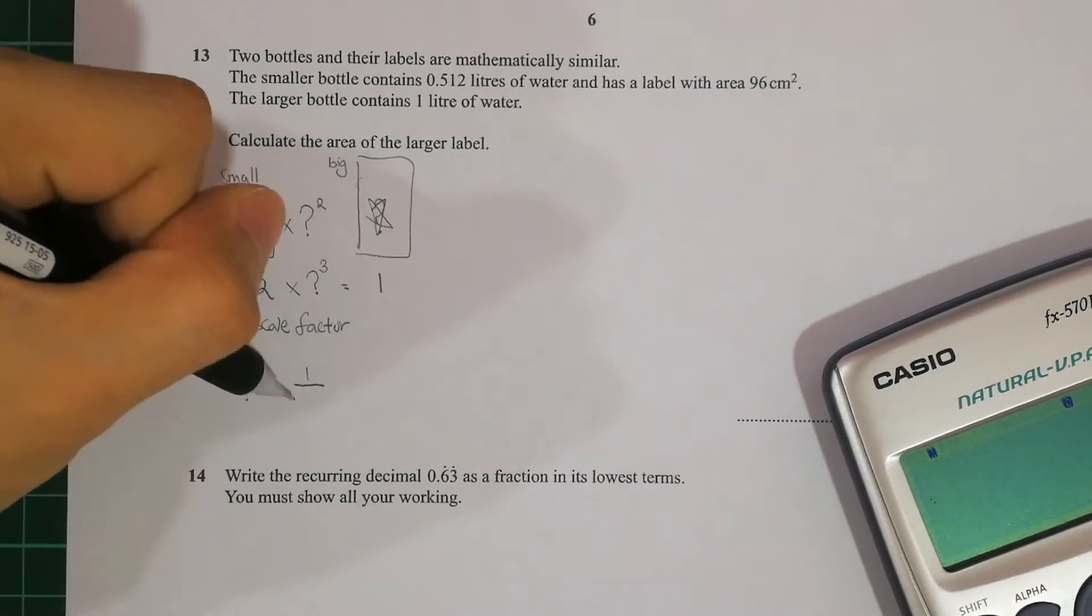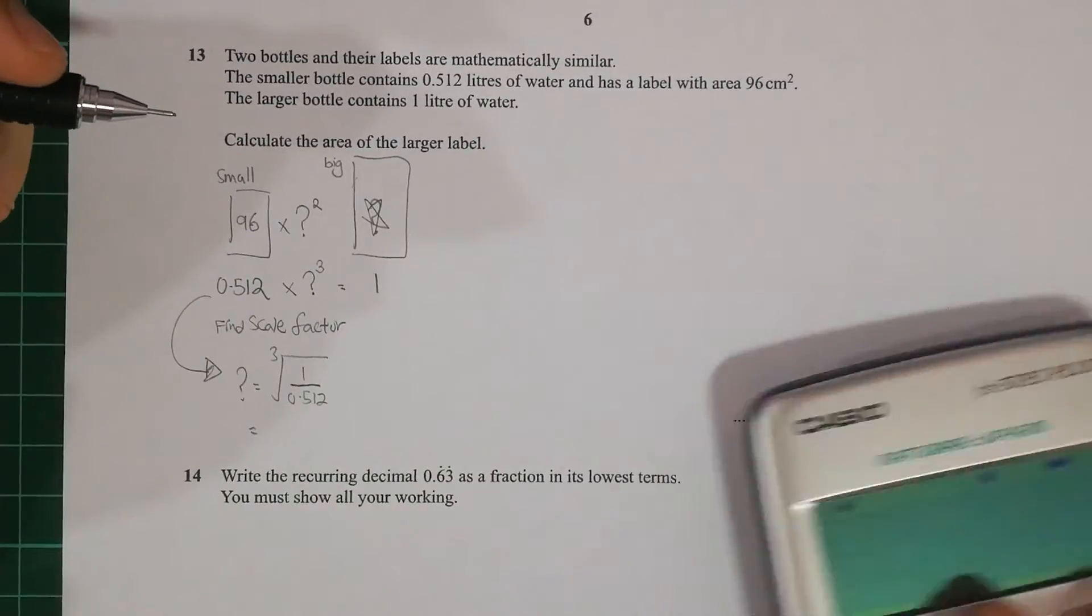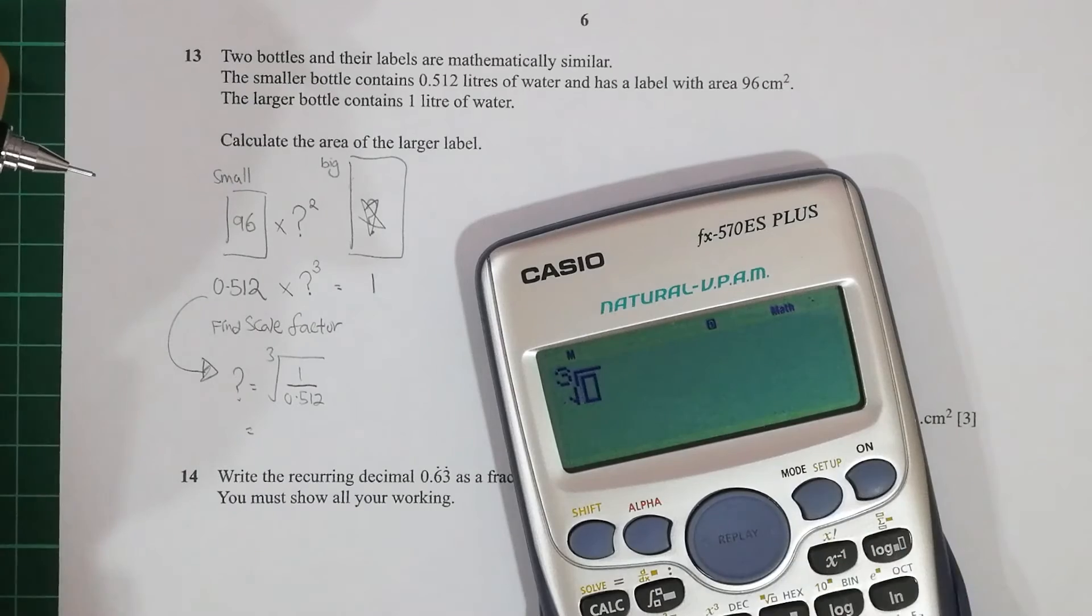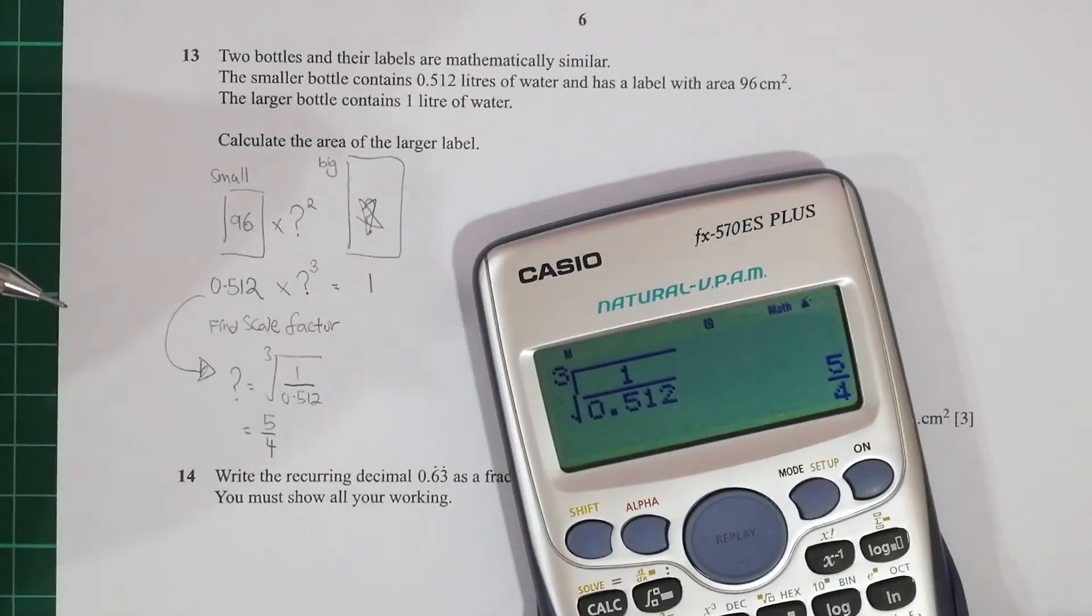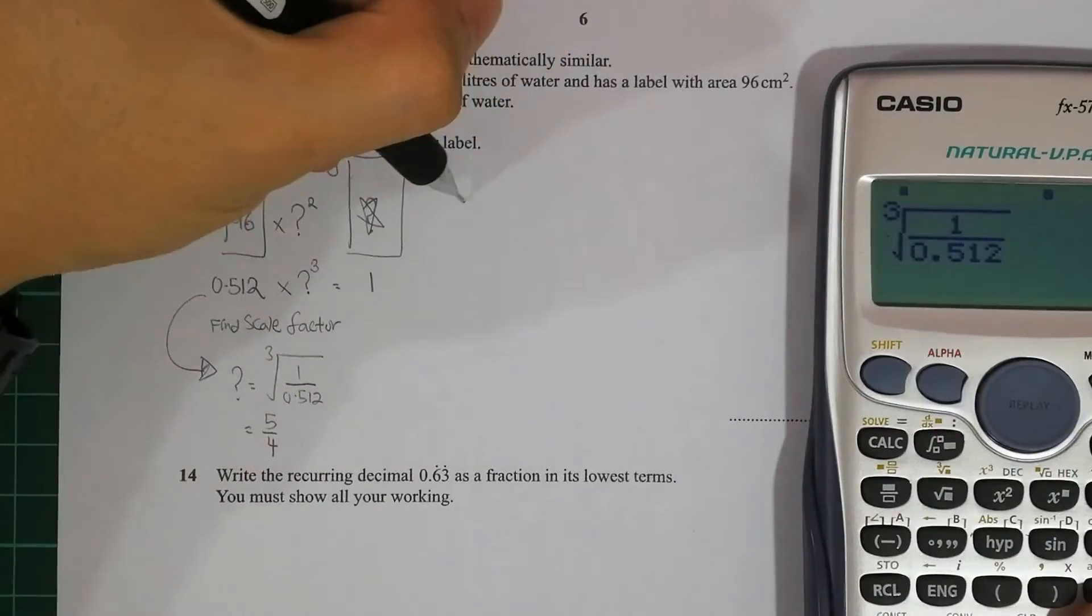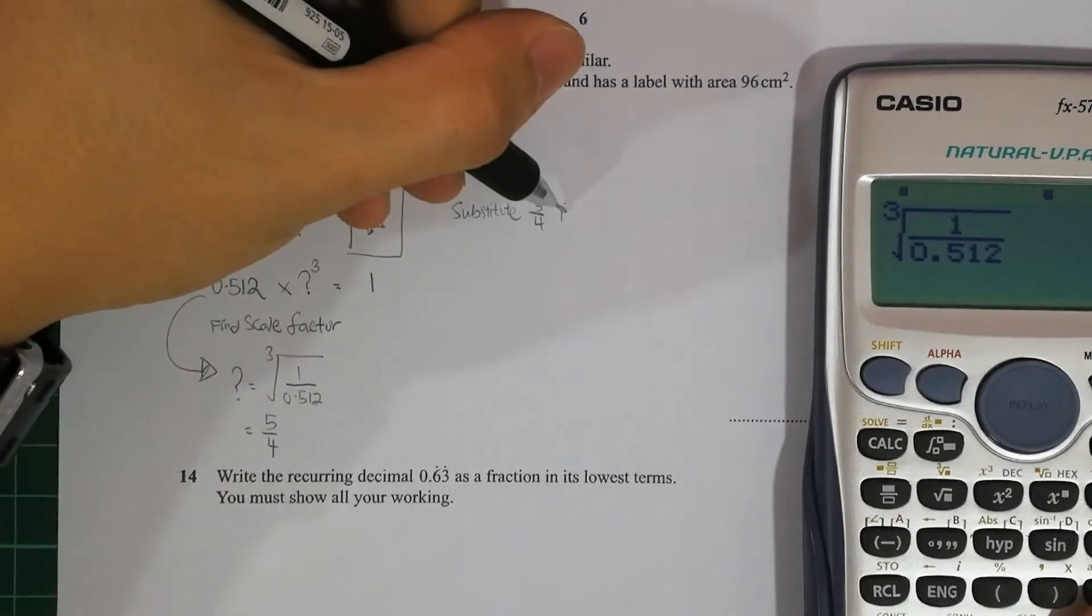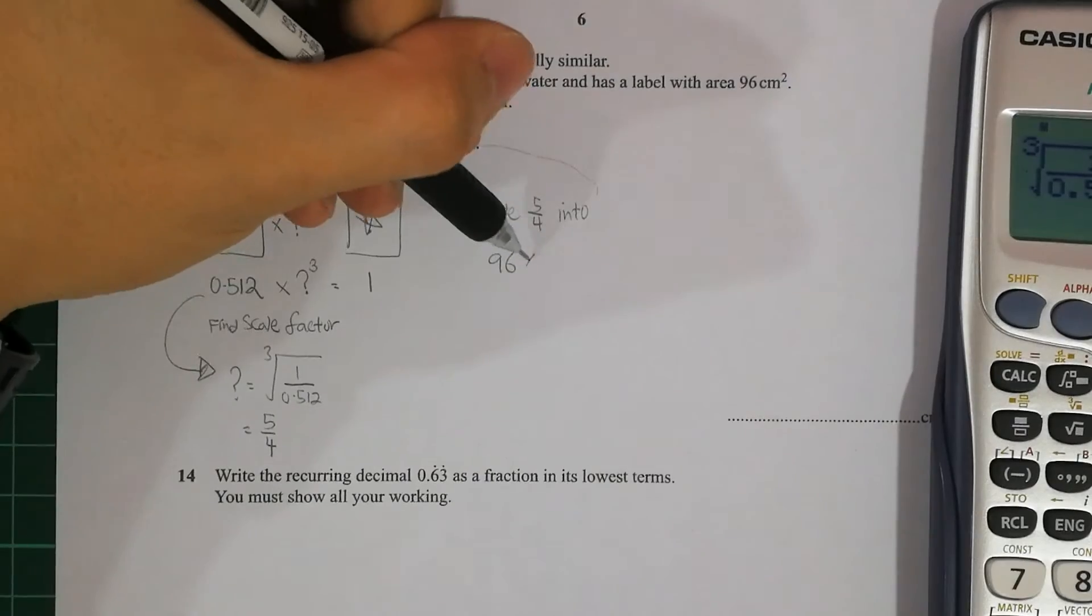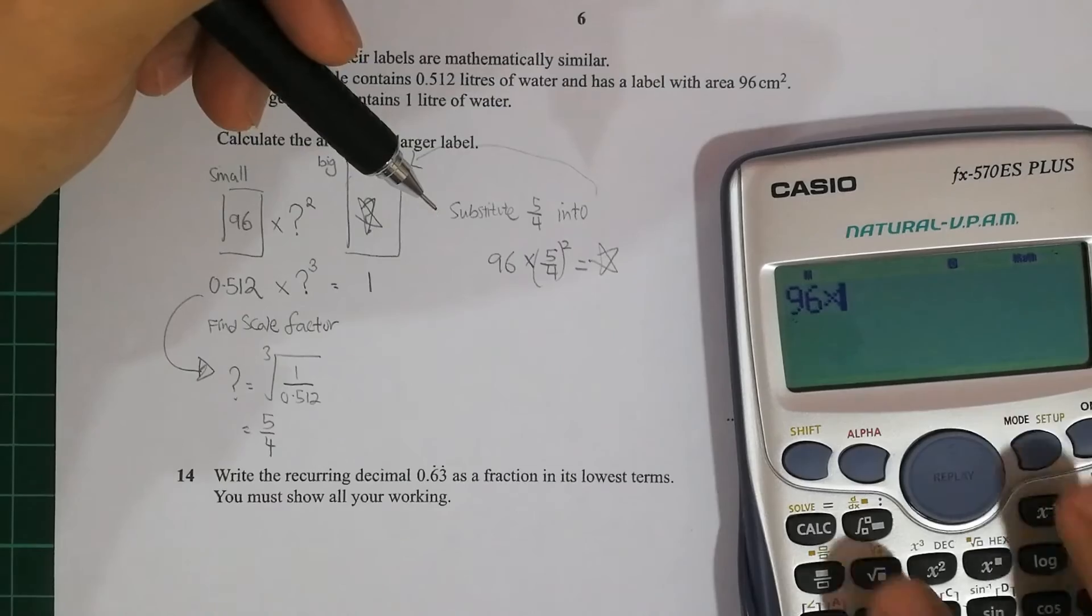So with this being said, we'll be using 0.512 times k cubed equals to 1. So you do the shifting, then you'll be able to identify k equals to 5 over 4. So after you've gotten the 5 over 4, all you need to do now is take 96 times 5 over 4 to the power of 2 to get the final answer.